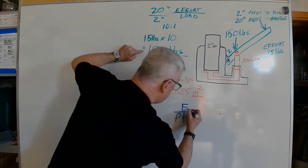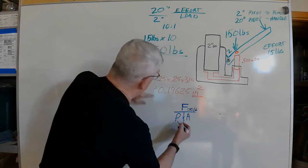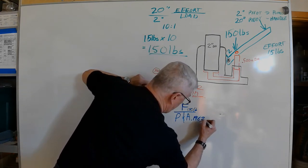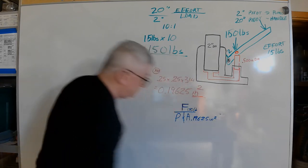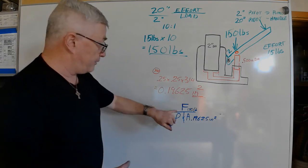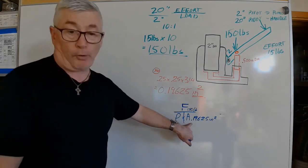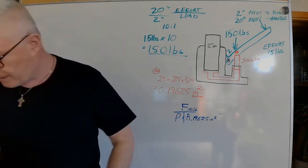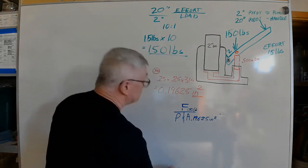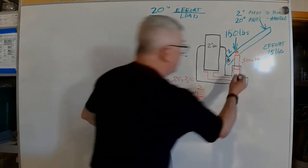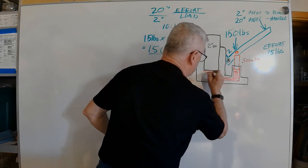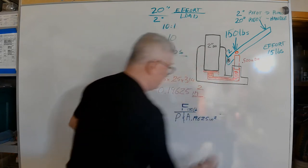We know that our force is 150 pounds and our area is 0.19625 inches squared. When I take 150 and divide it by 0.19625, I come up with a pressure. This fluid is all going to be under an equal pressure.